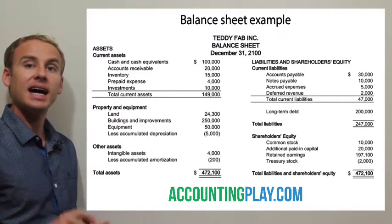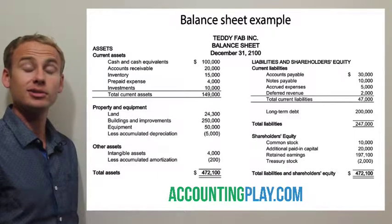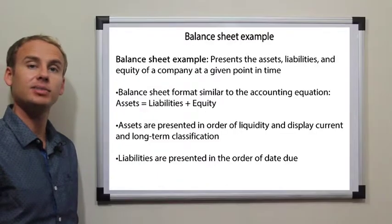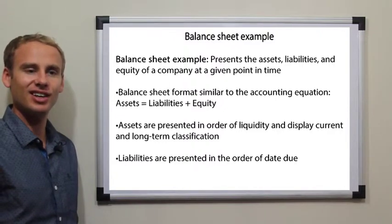Liquidity meaning how fast can the asset be converted into cash. So cash being the most liquid asset, we would expect to be the number one asset on the balance sheet. As they say, cash is king.